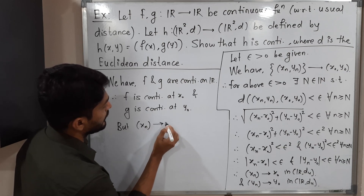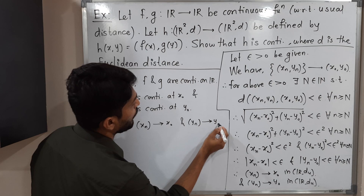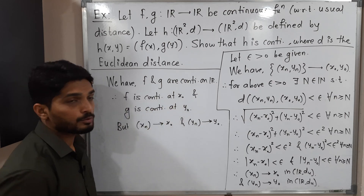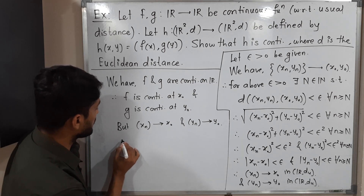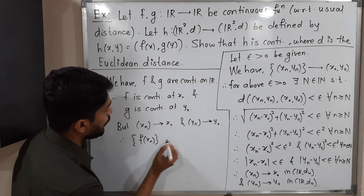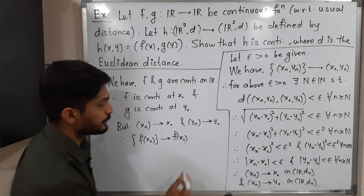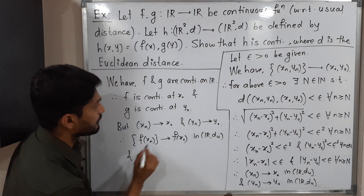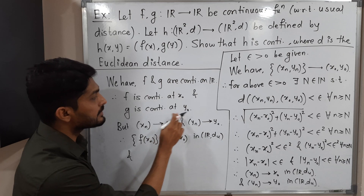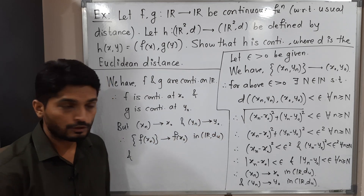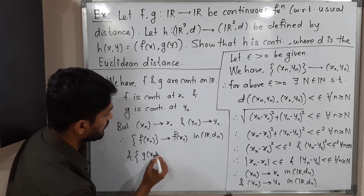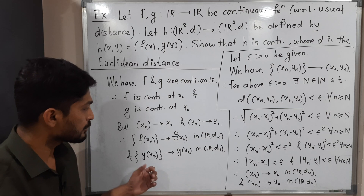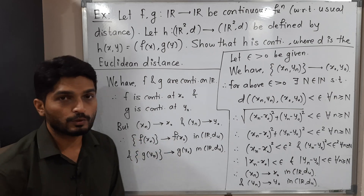We have xn converges to x₀ and yn converges to y₀. Since F is continuous at x₀, by the definition of continuity, F(xn) converges to F(x₀) in (ℝ, d_usual). Similarly, since G is continuous at y₀, by the definition of continuity, G(yn) converges to G(y₀) in (ℝ, d_usual). So we now have two more convergent sequences: F(xn) → F(x₀) and G(yn) → G(y₀).